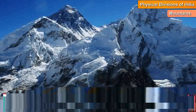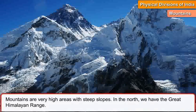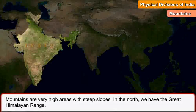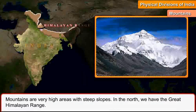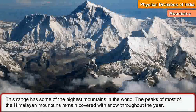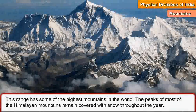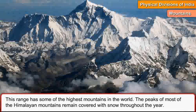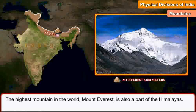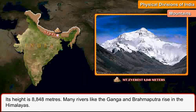Mountains are very high areas with steep slopes. In the north, we have the Great Himalayan Range. This range has some of the highest mountains in the world. The peaks of most of the Himalayan mountains remain covered with snow throughout the year. The highest mountain in the world, Mount Everest, is also a part of the Himalayas. Its height is 8,848 meters.